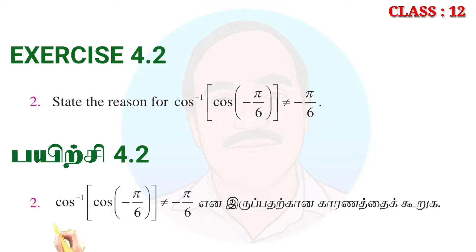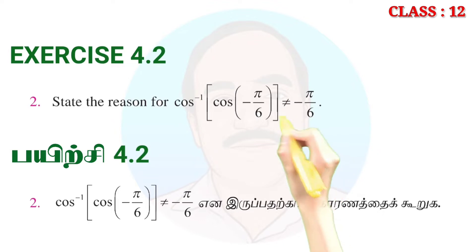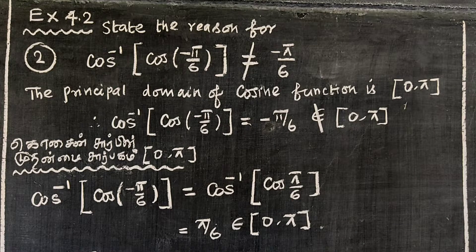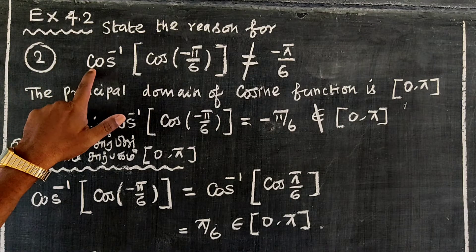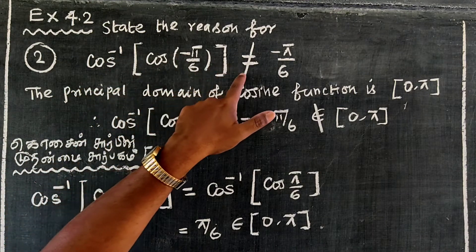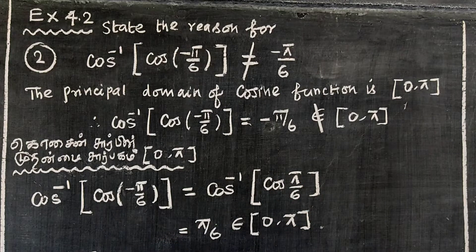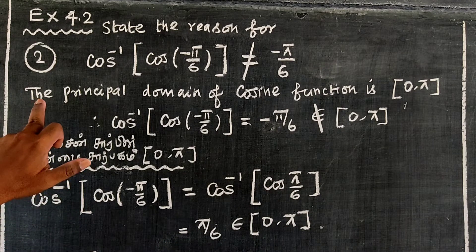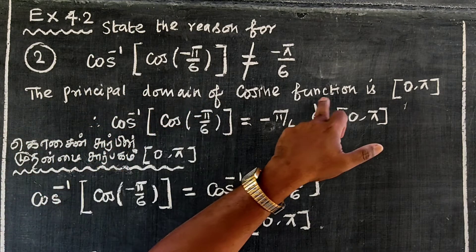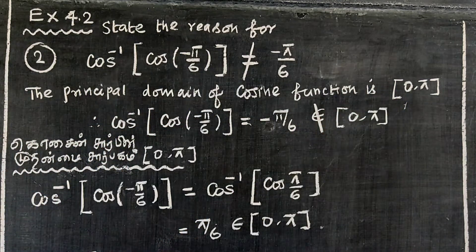The cos inverse of cos(-5π/6) is not equal to -5π/6. Why do we say that? Because of the properties of the cos inverse function.